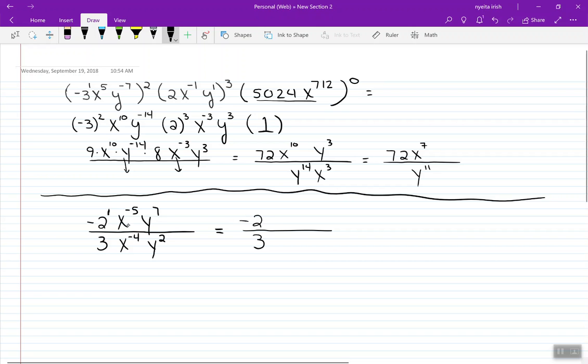Whereas X to the negative 5 is going to cross the line. Change its sign to X to the positive 5. X to the minus 4, cross the line, move it up to the top, change the sign. And then Y to the seventh stays put. It's a positive exponent already. So is Y to the 2.